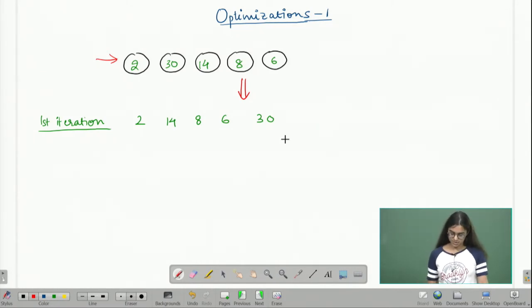When I run a second iteration, I start with 2 and 14. Because these are in the correct relative order, I do not need to swap them. Then I move to 14 and 8. I will need to swap these. So I get 2, 8, 14, 6, and 30.